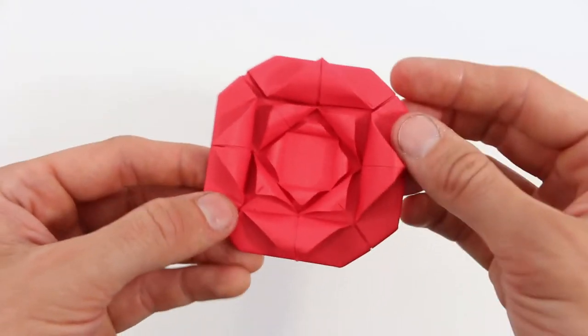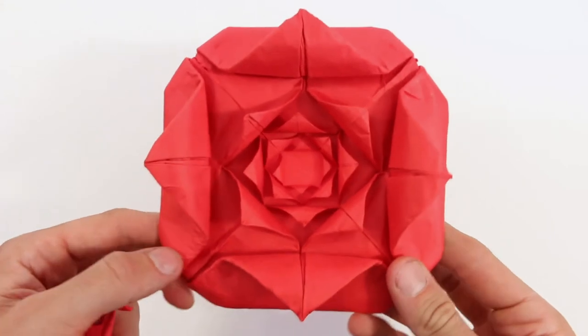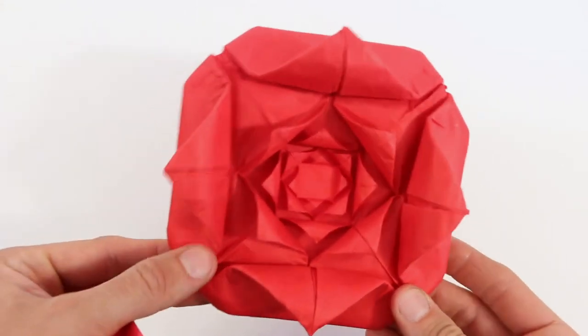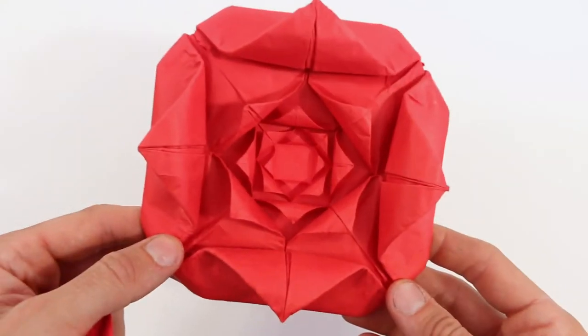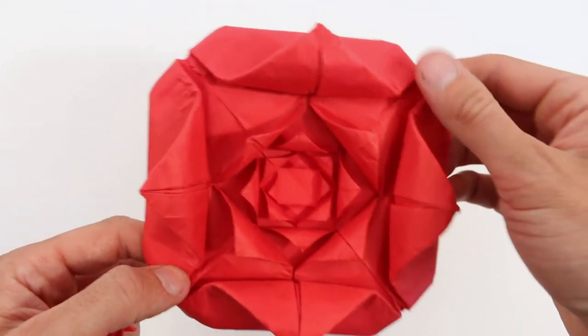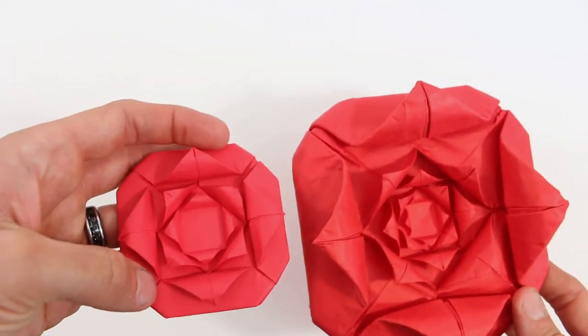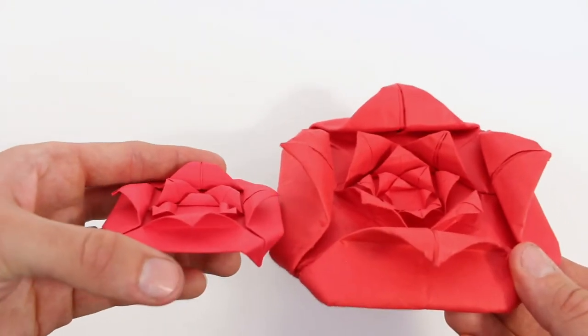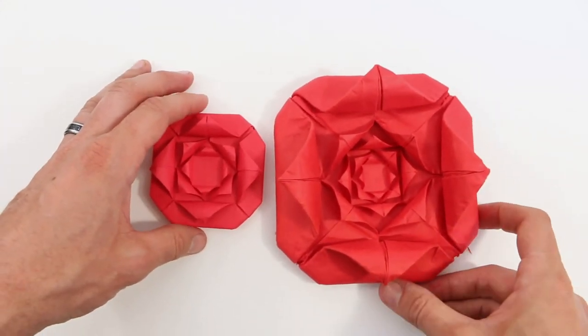Now you can try making one with even more petals than that. To make this one, I used a sheet of paper that was 30 inches by 30 inches. Paper gets really thick the more petals you make, but if you liked this video, make sure to subscribe, and thank you all so much, we'll see you next time.